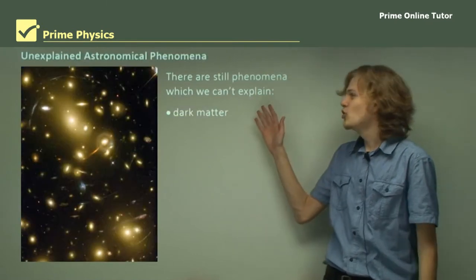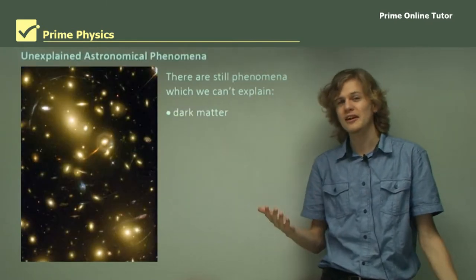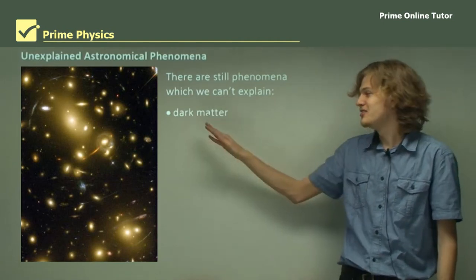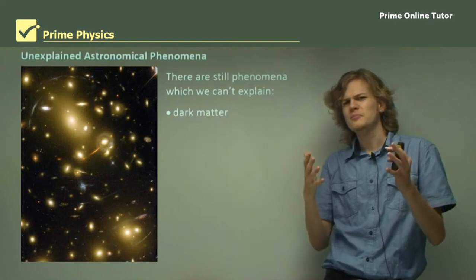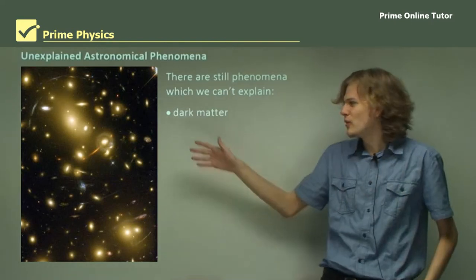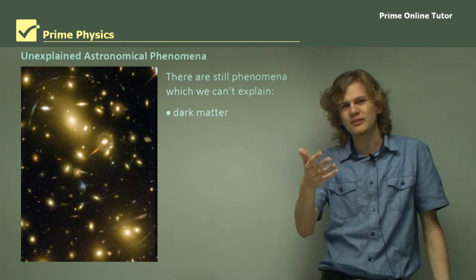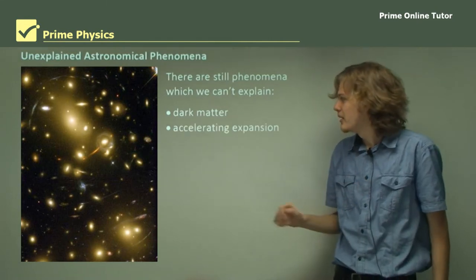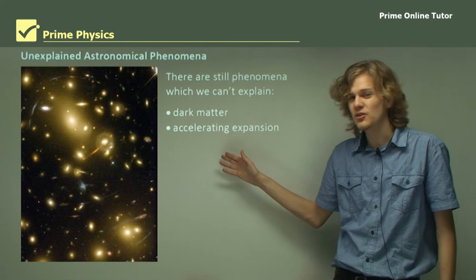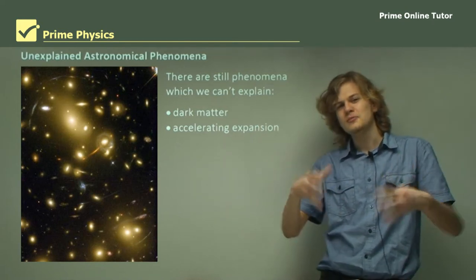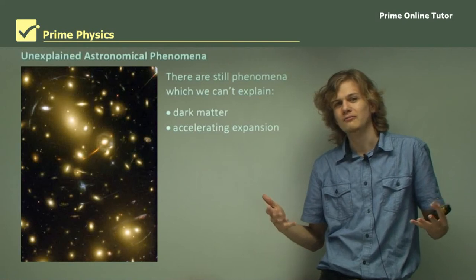There are still phenomena out there which we just can't explain with our current model. Things like this include dark matter, which is some sort of mysterious matter that we know is there because of gravitational lensing effects, but we can't actually see it or detect anything from it. There's the accelerating expansion of the universe. The universe is still expanding, but it keeps expanding faster and faster. And we have no idea why.